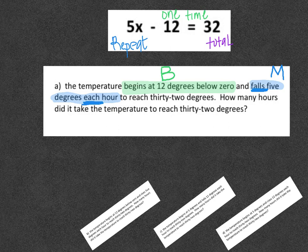And the last thing, it tells us our total, which is 32 degrees. When I start putting this together, B was 12 degrees below zero. If it's below zero, that means negative. So that's going to be minus 12.